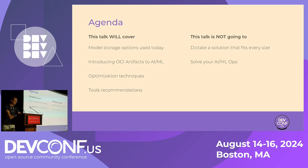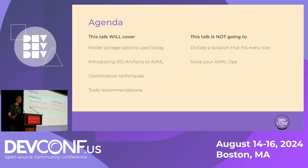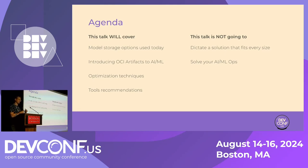What I want to talk about now is the storage options for AI models that are common in the industry today, why they are wrong, and how we can do better — for example, by introducing OCI artifacts into this space — hinting at optimization techniques that might help and some tool recommendations. Things I will not do today: I will not solve the problems for you, dictate a one-size-fits-all solution. This talk should give you more information to make educated decisions. It's not a sales pitch.